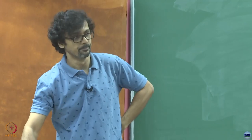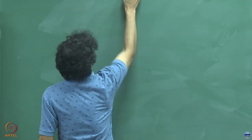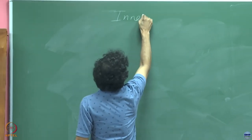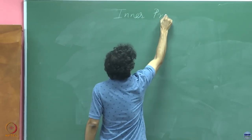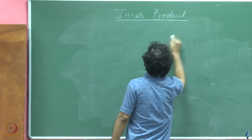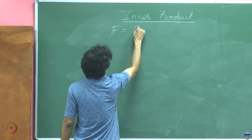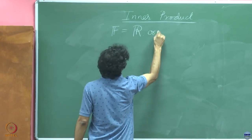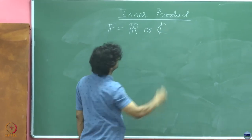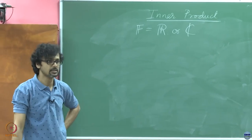The moment we get into Inner Products, however, we have to restrict ourselves to just R and C. So our F — that is the first most important thing you have to remember — is either R or C, and none of those other fields that you might have seen, like finite fields.